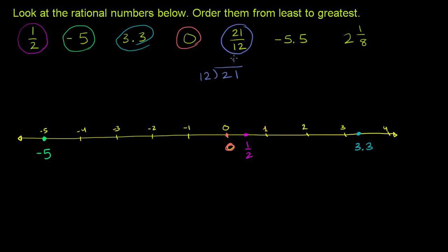So 12 goes into 21. Well, it goes into it one time. 1 times 12 is 12. If you subtract, you get a remainder of, well, we could regroup here, or borrow. If you don't want to do this in your head, you would get 9. But let's do this. So if we borrow 1 from the 2, the 2 becomes a 1. This becomes 11. Or we're really regrouping a 10.